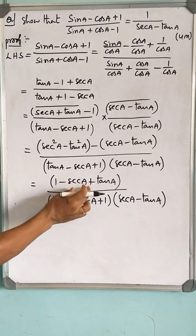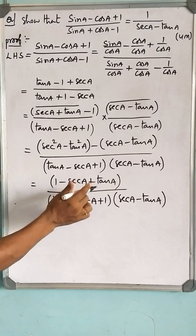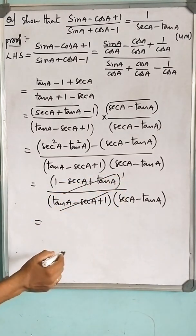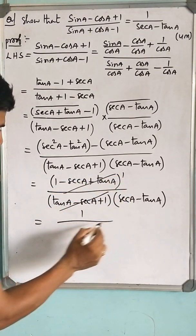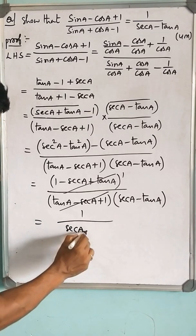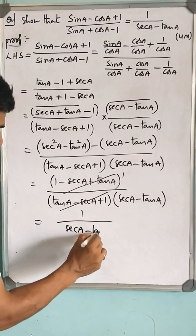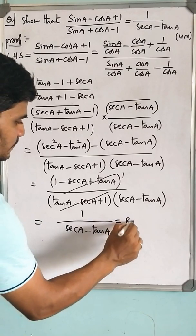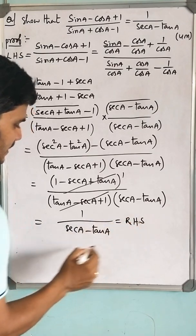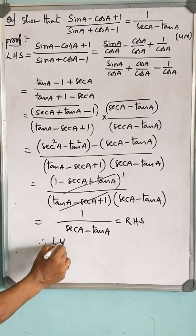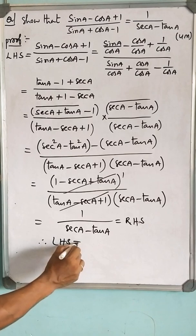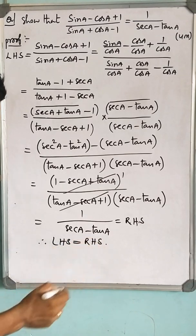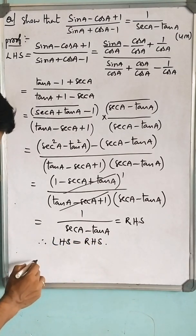Look at this — as you know, sec²A - tan²A equals 1. After cancellation in the numerator, we get 1 in the numerator. These two factors cancel, and we get 1 / (sec A - tan A). That is your right-hand side. Therefore, LHS has arrived as equal to RHS.